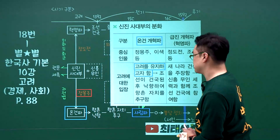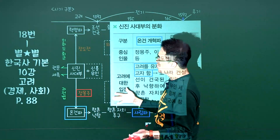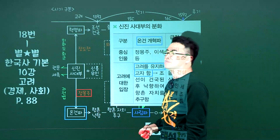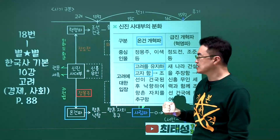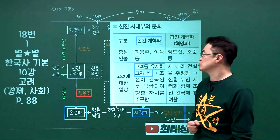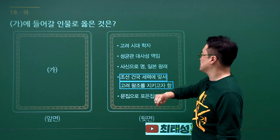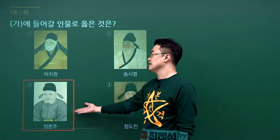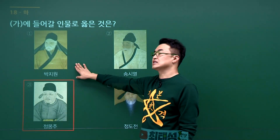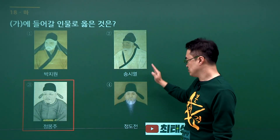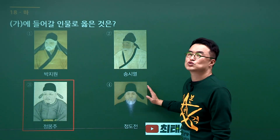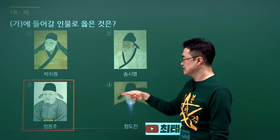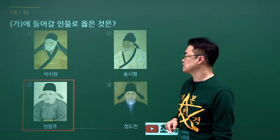고려 말 정몽주 문제입니다. 고려를 끝까지 지키려고 했던 사람이 정몽주입니다. 가에 들어갈 인물로 고려 왕조를 지키고 있다는 인물은 정몽주입니다. 박지원은 조선 후기 실학자, 송시열은 조선 후기 유학자, 정도전은 고려를 지키지 않고 조선을 건국하려 했던 인물입니다. 정답은 3번입니다.